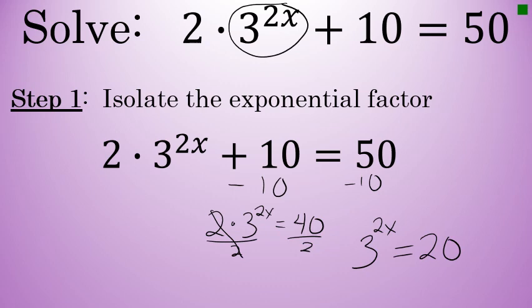Now that 3 to the 2x power is isolated, it's by itself on one side of the equation. I can move on to step 2.